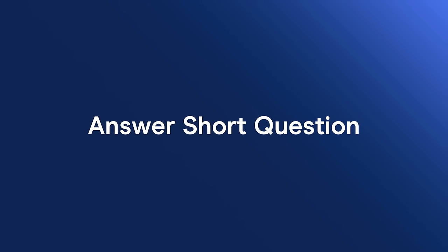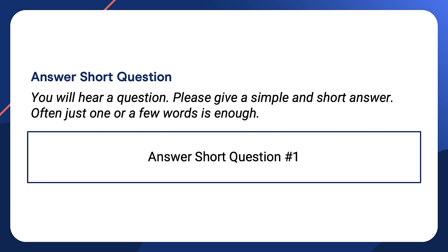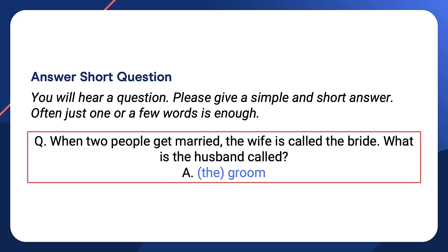All right, let's keep going and finish with answer short question. We'll answer two questions. All you need to do is simply listen carefully and answer the question in a word or short phrase. Ready? Listen, then speak. When two people get married, the wife is called the bride. What is the husband called? Did you get it? The answer is groom, or the groom. With or without the article 'the' is fine. Both are acceptable.